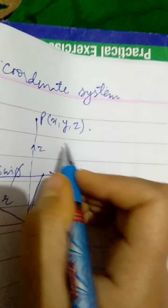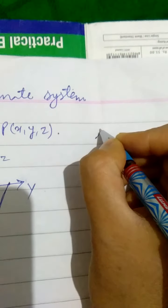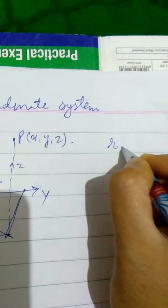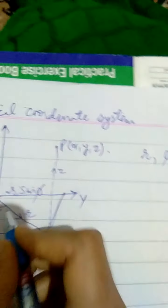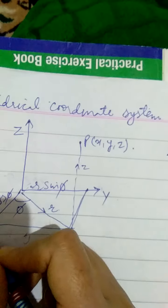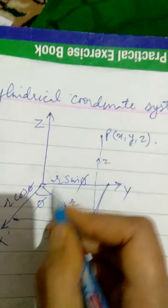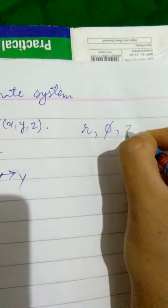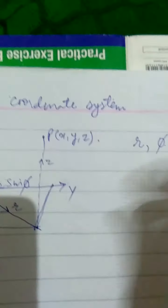So we have specified the three cylindrical coordinates. The three cylindrical coordinates are: r, along the radius of the cylinder; phi, the angle which the radius vector makes with the x-axis, with direction from x to y in the counterclockwise direction; and z, which is the height along the vertical z-axis.